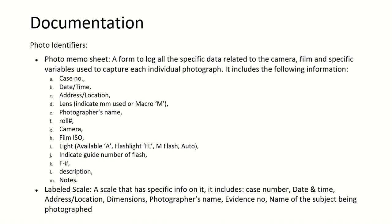The second photo identifier is the labeled scale: a scale that has specific information on it, including case number, date and time, address location, dimension, photographer's name, evidence number, and name of the subject being photographed.